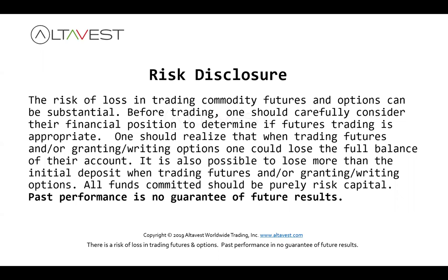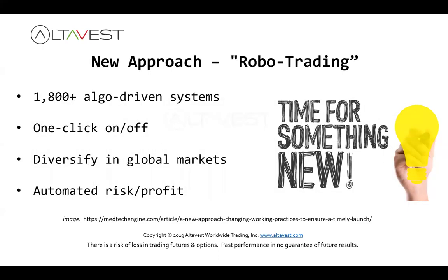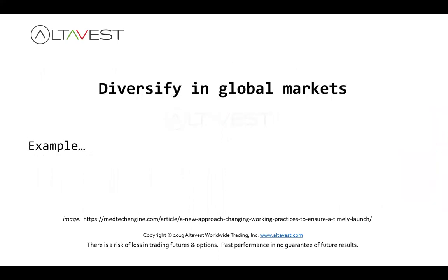That's probably more important than ever when looking at historical performance on trading systems. With that said, we're going to do some robo trading — look at a new approach. We're going to look at about 1,800 algo trading systems. You can click them on, you can click them off, and we're going to show you how to do all that. You can diversify among global markets and all the risk and profit controls are automated. That's the whole idea behind algo trading, auto trading — it's all kind of the same thing. Diversifying across global markets or even just market sectors.